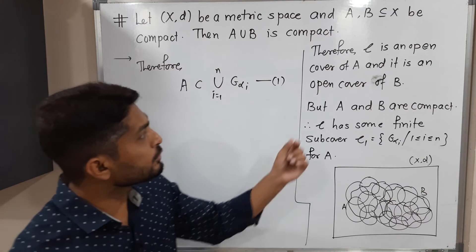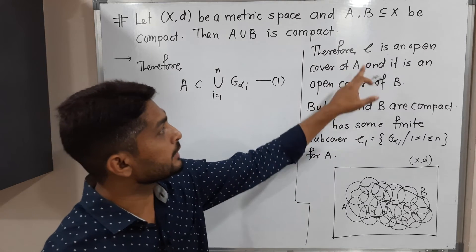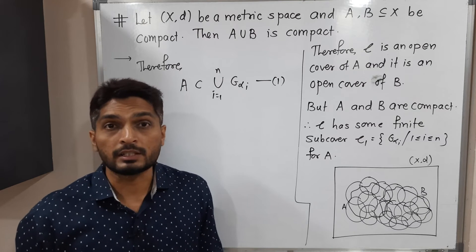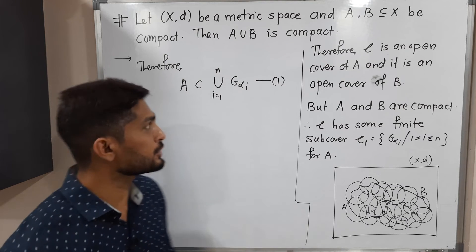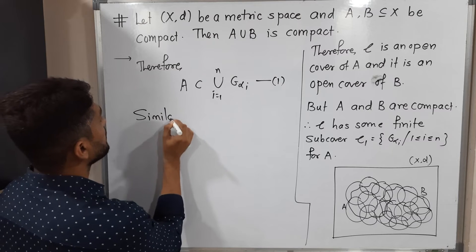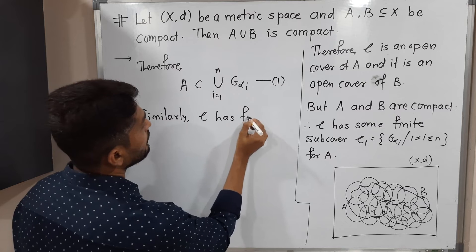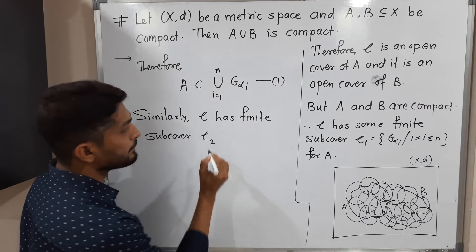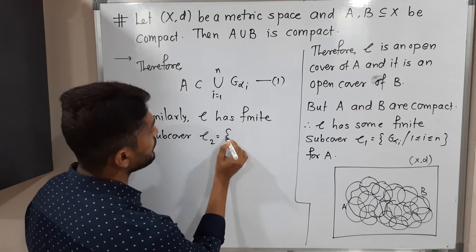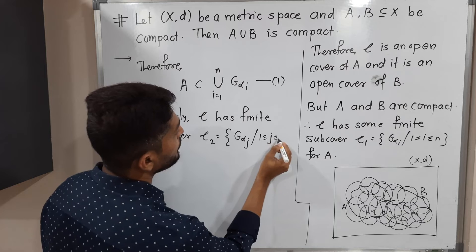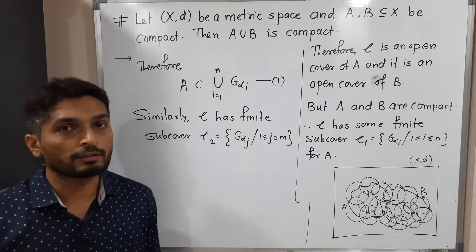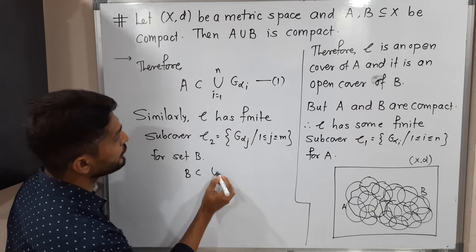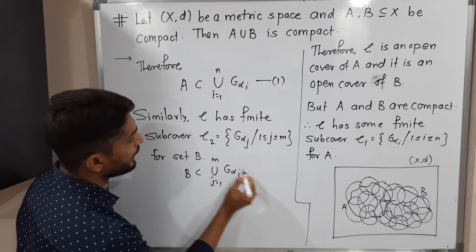Similarly, since B is also compact and script C is an open cover of B, every open cover of B has a finite subcover. Therefore script C also has a finite subcover for B. We call this script C2 = {G_αj : j = 1, …, m}. Therefore B ⊆ ∪G_αj for j = 1 to m. Call this equation (2).